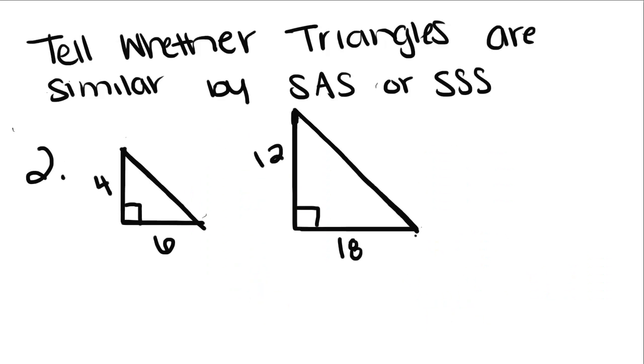For the next one, we have these two triangles. We know that this is a right angle, this is a right angle, and we have these two side lengths. So since this is a right angle, its measure is 90 degrees.